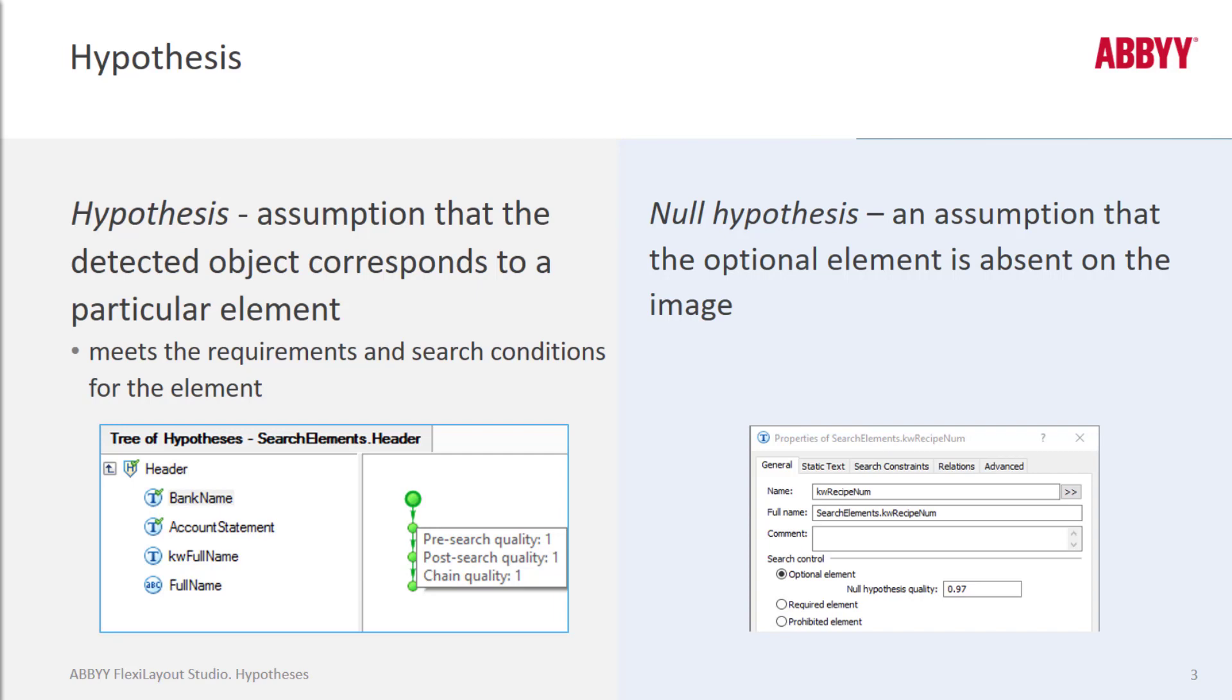FlexiLayout Studio always searches from the top to the bottom and from the left to the right, starting at .00, which is the upper left-hand corner. A hypothesis value can be anywhere from 0 to 1. If an element is found but not with perfection, it will have a quality lower than 1. The null hypothesis quality has a default minimum threshold of 0.97.